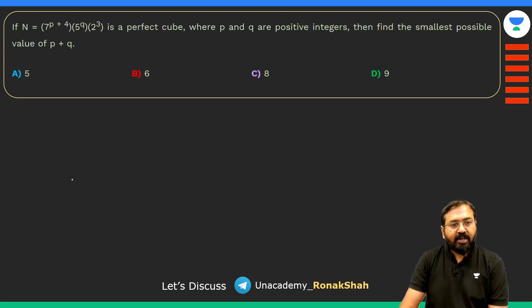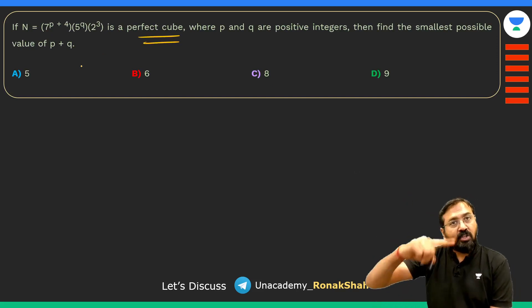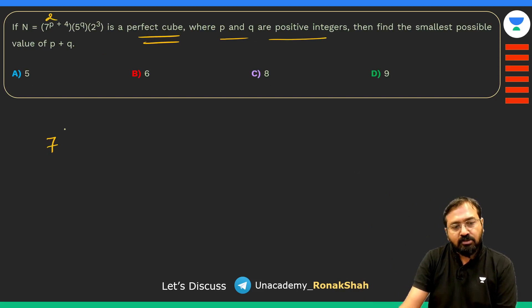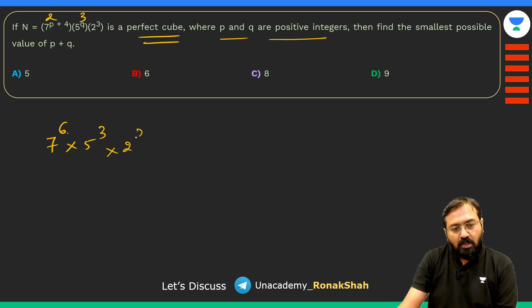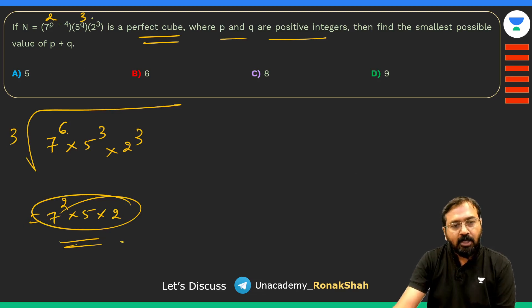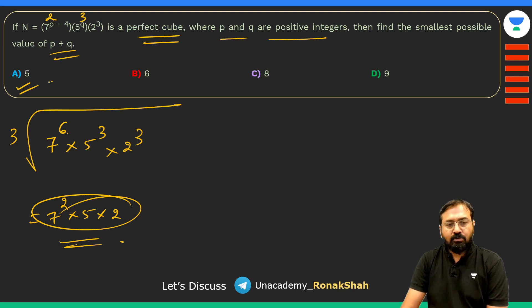For a perfect cube, all prime factor exponents must be multiples of 3. Given the expression with 7^(2p) × 5^q × 2^3, take p = 2 so 7^6 is a perfect cube component, and q = 3 so 5³ is already a cube. The cube root gives 7² × 5 × 2 = 98 × 2 = ... so p + q = 2 + 3 = 5.